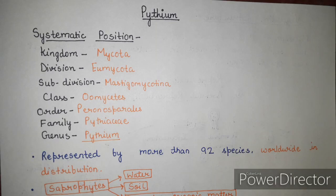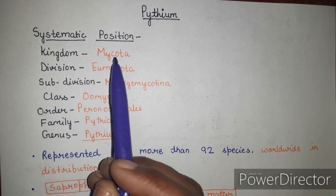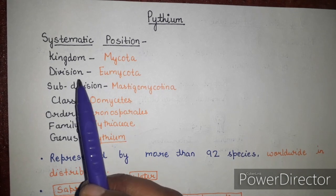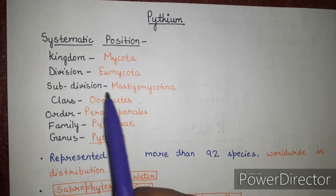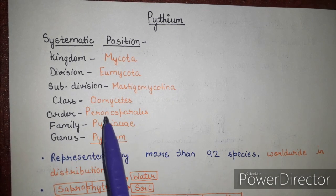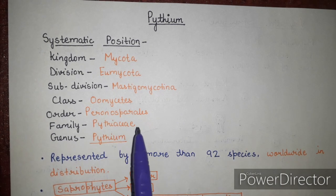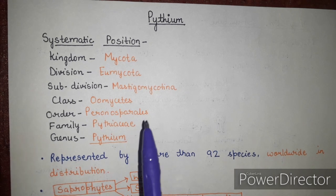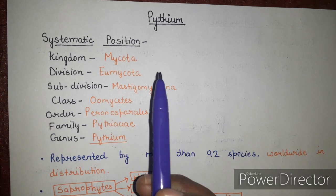Hello everyone, welcome to my channel all about biology. Today we will discuss the fungus Pythium. The systematic position of Pythium: Kingdom Mycota, Division Eumycota, Subdivision Mastigomycotina, Class Oomycetes, Order Peronosporales, Family Pythiaceae, and Genus Pythium.